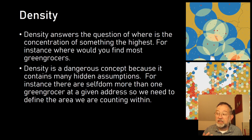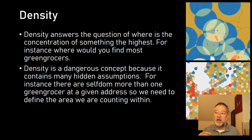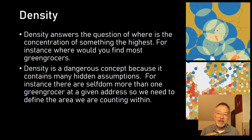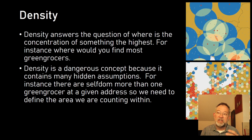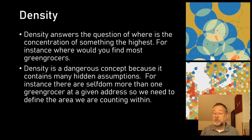Density is essentially about how close things are, making it a type of distance measure. It is a potentially dangerous tool to use because there are many subtleties involved. For example, if you want to calculate the density of greengrocers, you have to specify a search range — the density of greengrocers within two kilometers, one kilometer, or 50 meters.